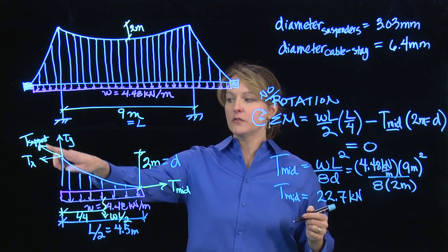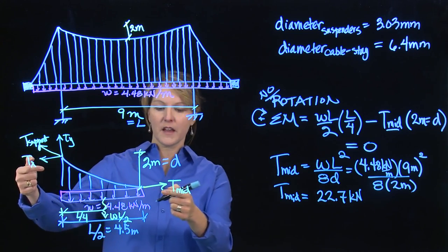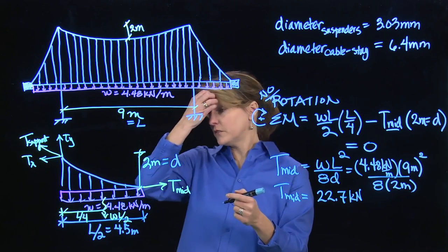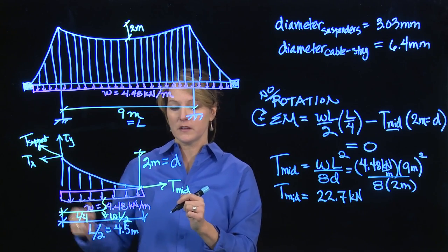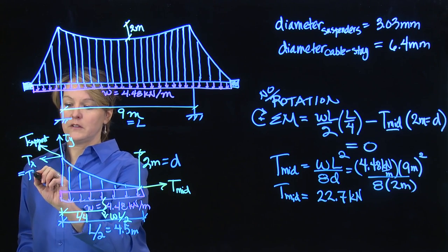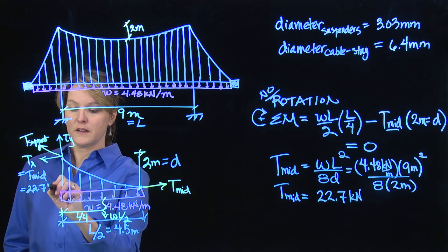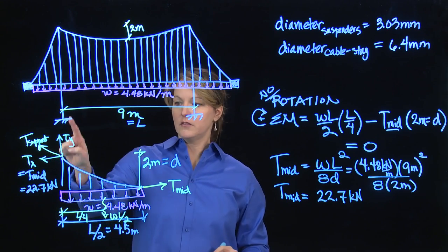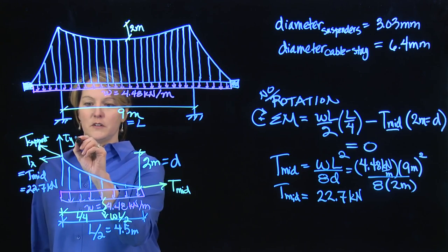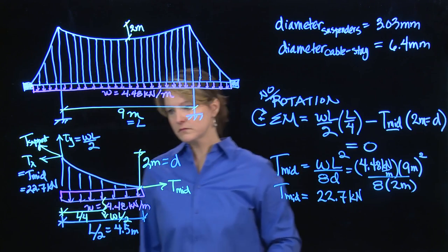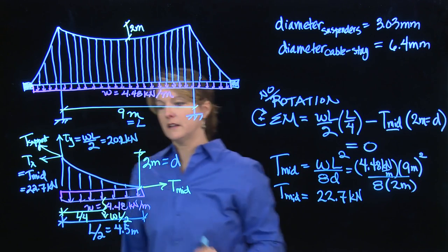It turns out that the tension force at the support is higher. But if we use horizontal and vertical equilibrium, we can solve for that. I'm not going to write the equations. We've done horizontal and vertical equilibrium quite a bit. But if we look at horizontally, T_mid and T_x are the only two things happening. So T_x is going to equal T_mid if we don't want this to move horizontally. And that is also then 22.7 kilonewtons. And vertically, we have just T_y and the total load acting downward, which is W L over 2. That value ends up being 20.2 kilonewtons.